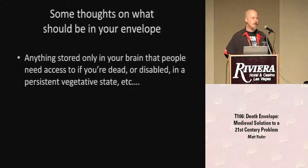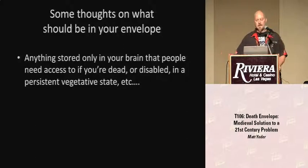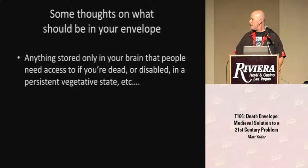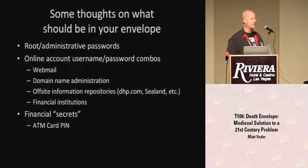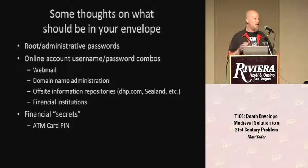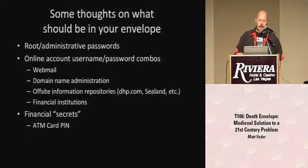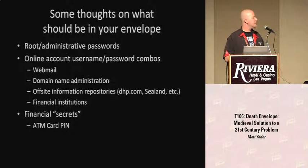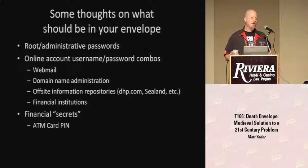Obviously, anything being carried around in your brain right now that someone needs after you die should be in an envelope. Root or administrative passwords definitely should be in an envelope. Online accounts for webmail, domain name administration — like if you have a GoDaddy account — or your financial information: these are important and should be available. I've given thought as to whether financial secrets should be in there as well, and they probably should. Obviously there are legal remedies to get access to someone's bank account in the event of their death, but there's a certain period where it's much easier if you can access it as that person once they've died.